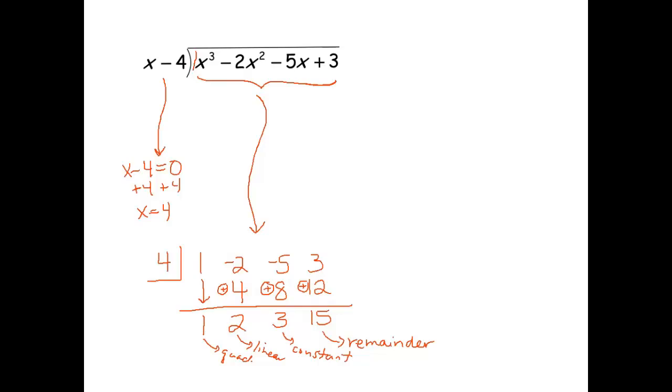So here's our answer. We get 1x squared plus 2x plus 3. There's the constant. And I'll write r15 for remainder 15.